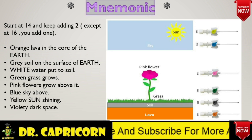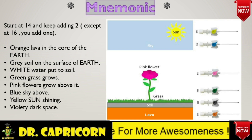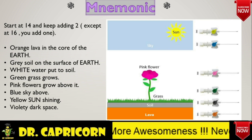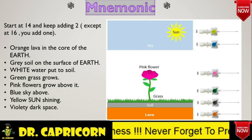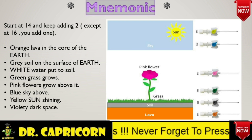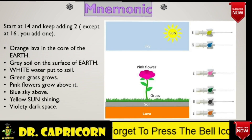As females are fond of flowers, the pink color cannula is most commonly used in adult females. 22 gauge is blue in color, resembling the sky — blue color cannula is most commonly used in adult males. 24 gauge is yellow in color, resembling the shining sun. 26 gauge is violet color, resembling dark space.